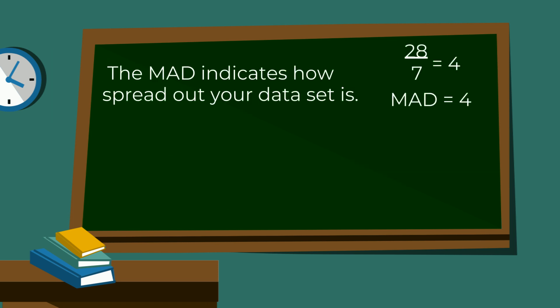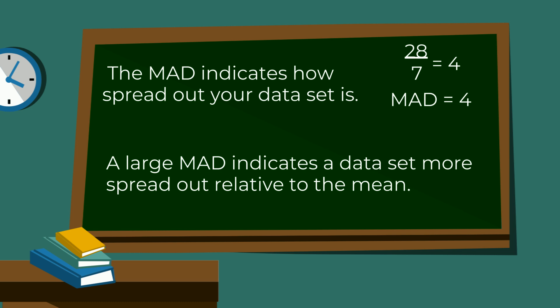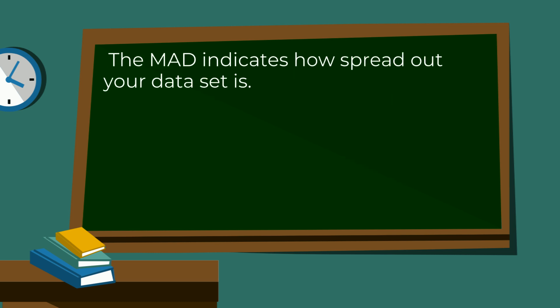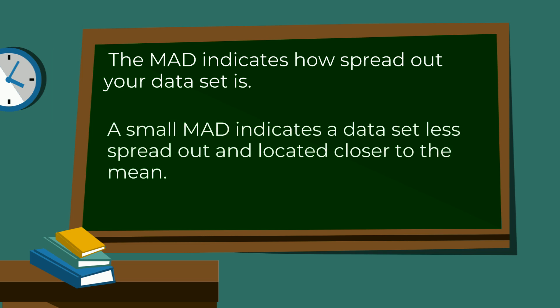What does the MAD tell you? The MAD indicates how spread out your data is. A large MAD indicates a data set more spread out relative to the mean. A small MAD indicates a data set less spread out and located closer to the mean.